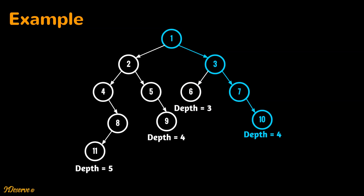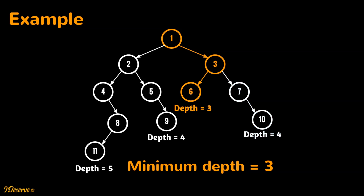The final path from root to leaf is 1, 3, 7, and 10 — depth is 4. So the minimum depth of this binary tree is 3.